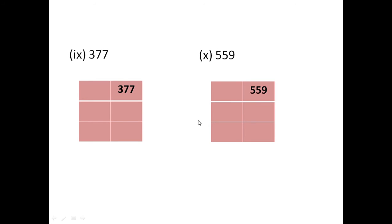Next example: 377. This number is an odd number, so let us start with 3 as a prime factor. Add the digits: 3 plus 7 plus 7 is 17. 17 is not divisible by 3. So, you cannot take 3 as a prime factor. Also, there is 7 in the unit place — there is no 5 or 0 in the unit place — so you cannot take 5 as the prime factor either.